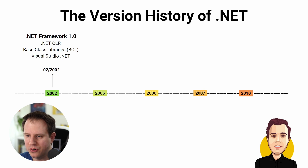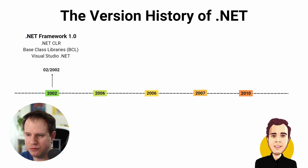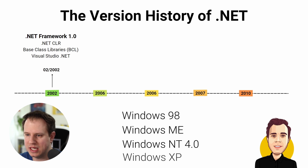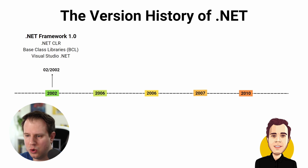The first version of the .NET Framework was released on February 12th, 2002. It has been a Windows-only platform for the whole lifetime of the .NET Framework name, starting from 2002 to the present. The .NET Framework 1.0 was released for Windows 98, Windows ME Millennium Edition, NT4, and the beloved Windows XP. It introduced the .NET CLR, the .NET Base Class Libraries, ASP.NET, and most importantly, the first version of Visual Studio .NET.